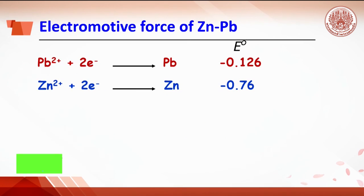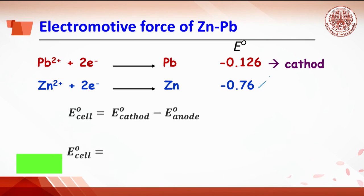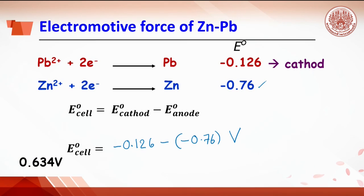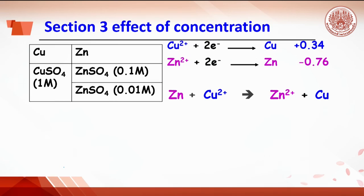Now, looking at the zinc-lead cell: from the standard reduction potentials, it can be concluded that the lead half cell is the cathode and zinc is the anode. Replacing the values gives −0.126 minus (−0.76) volts, so the EMF of this cell is 0.634 volts.